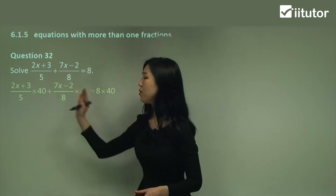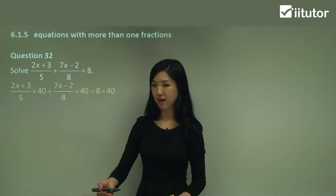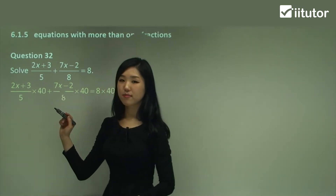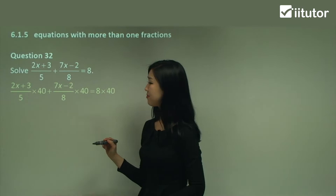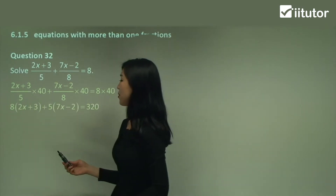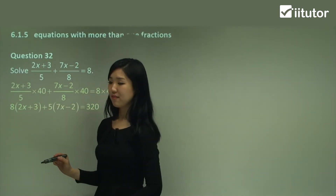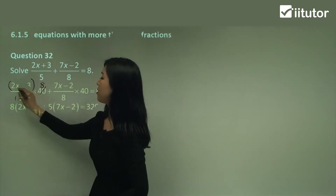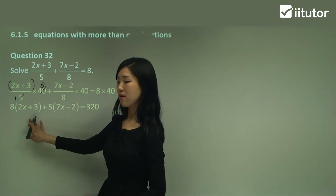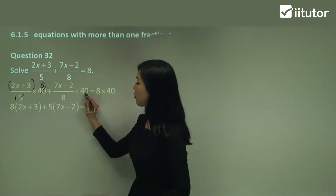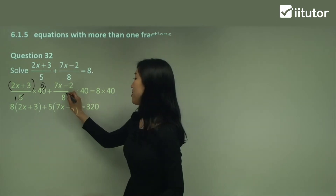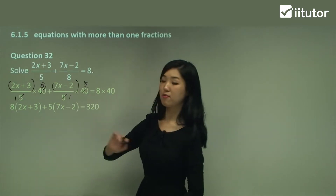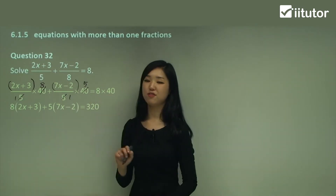That way you can eliminate both denominators. So what's 40 divided by 5? That's 8, so we simply multiply this by 8 — the 5 becomes 1 and that becomes 8. So we'll have 8 times (2x + 3). Now here, 40 divided by 8 — that becomes 5. So we have 5 times (7x − 2). And 8 times 40 is 320.